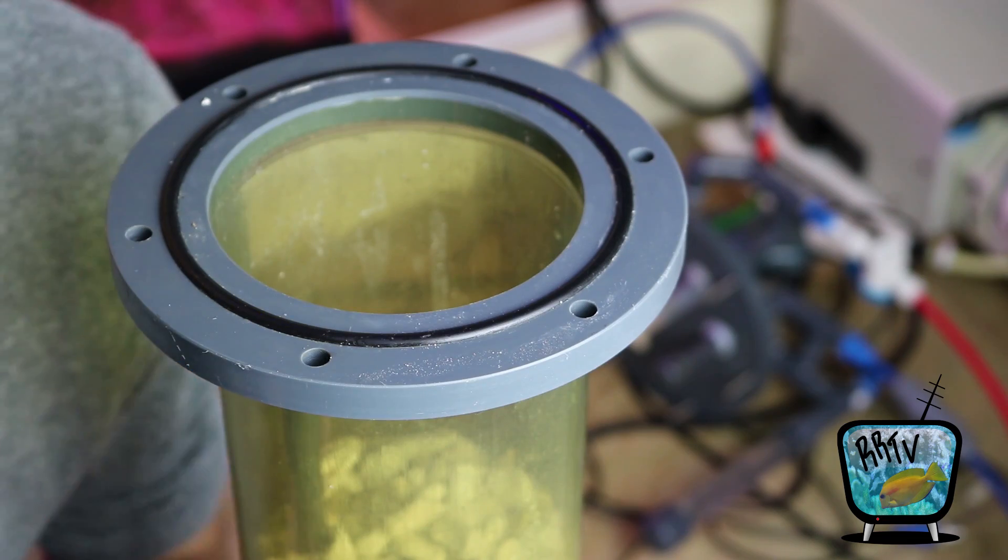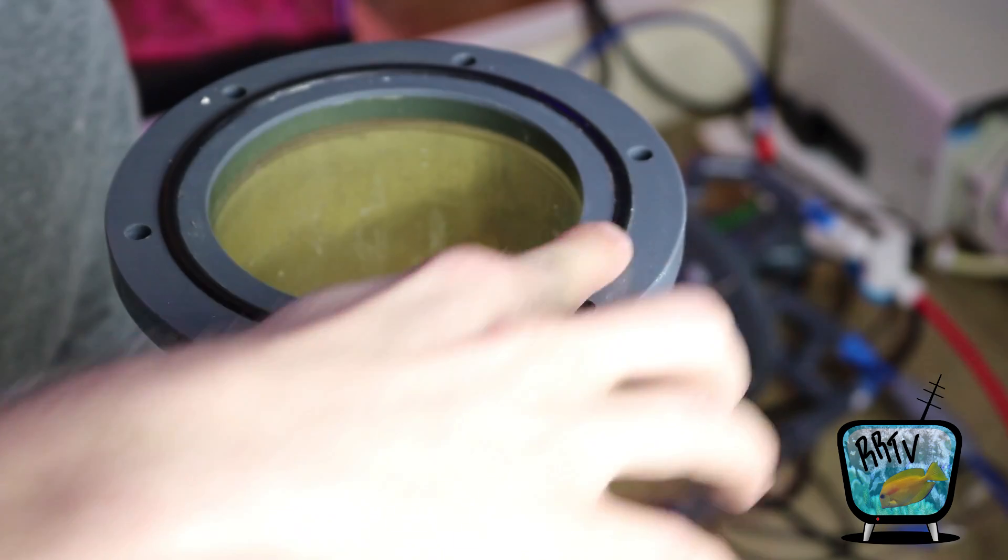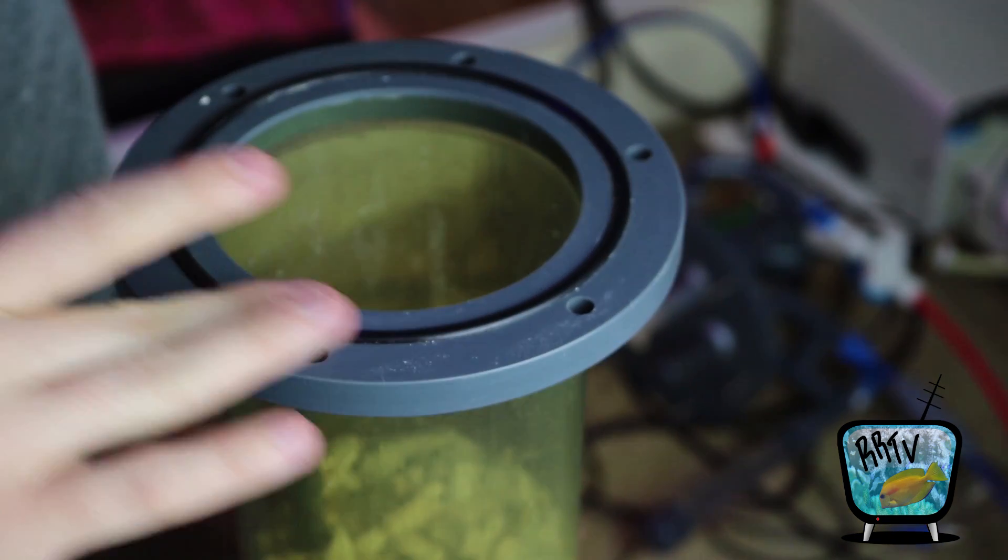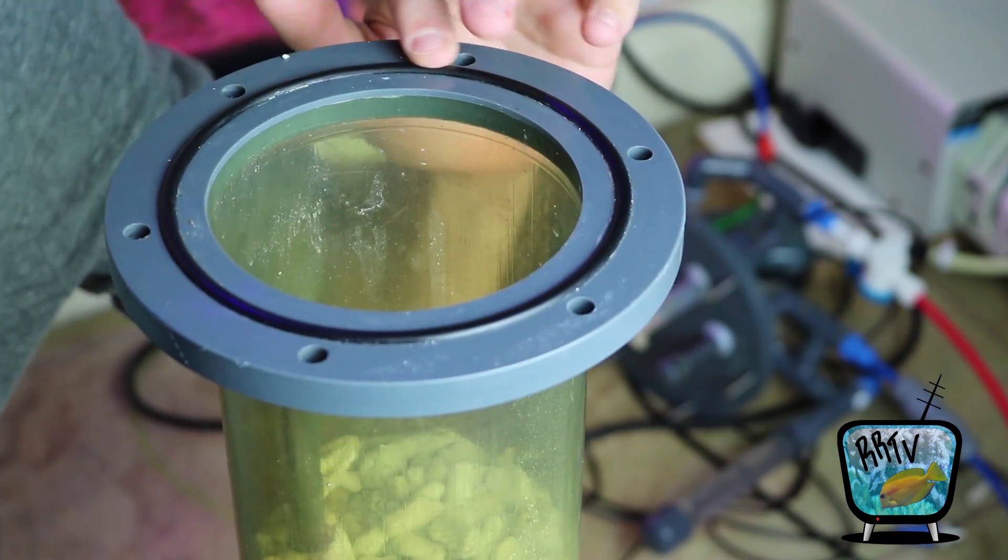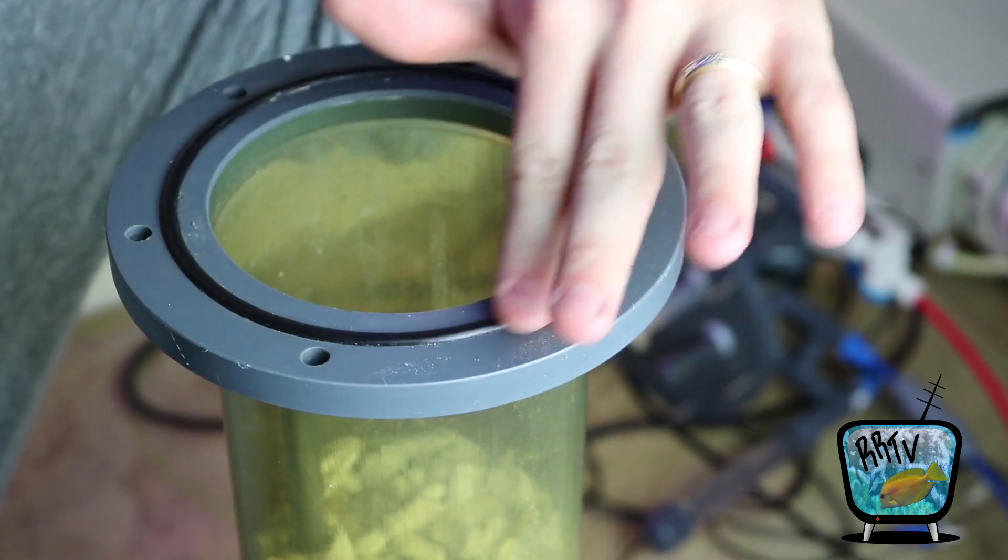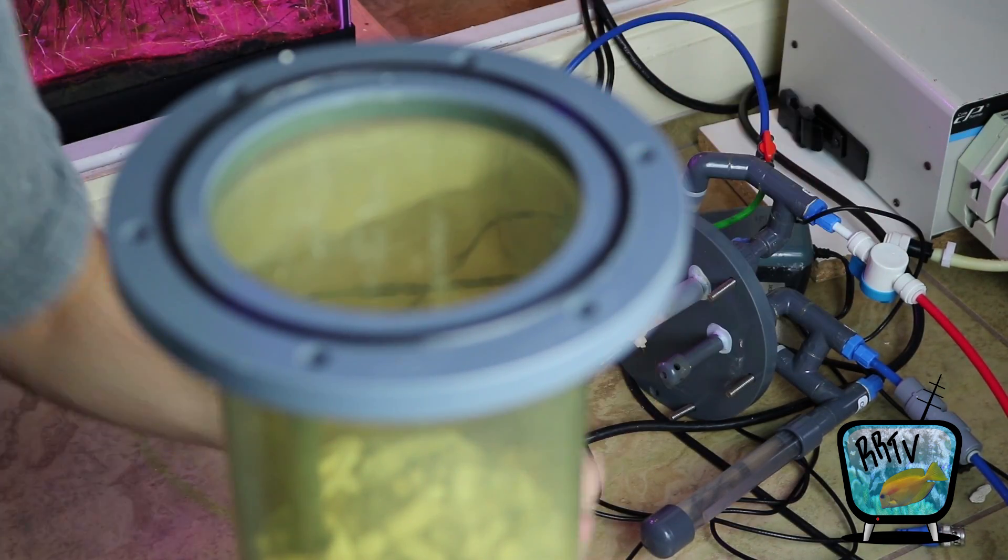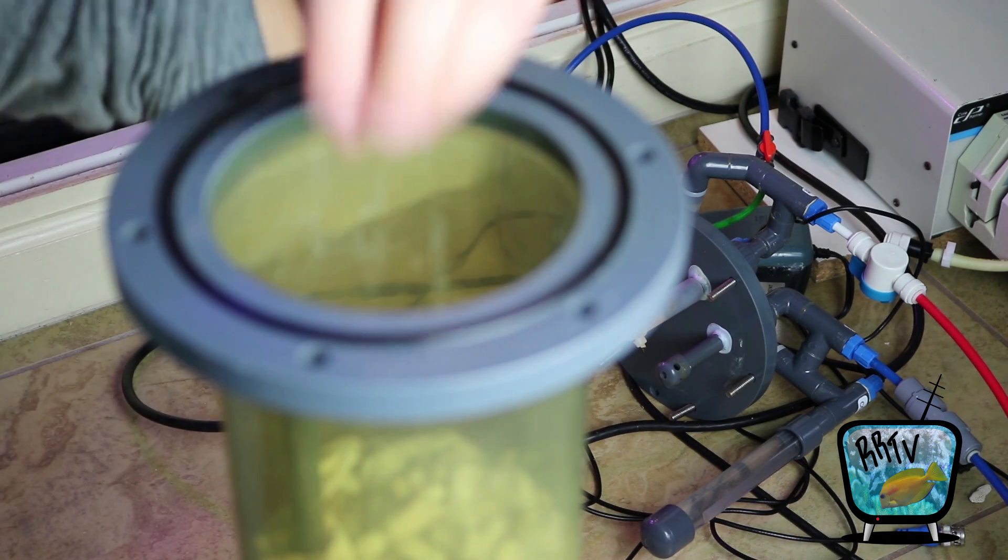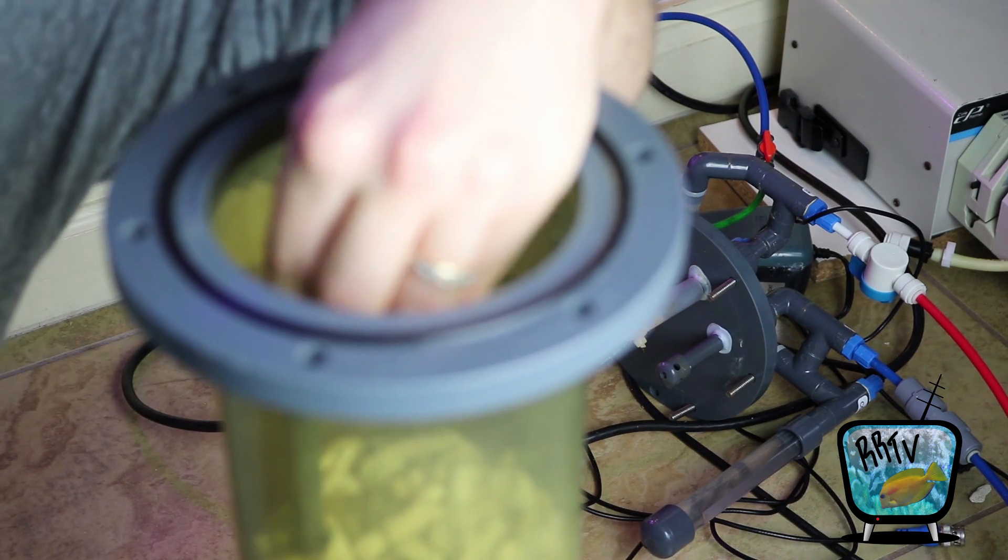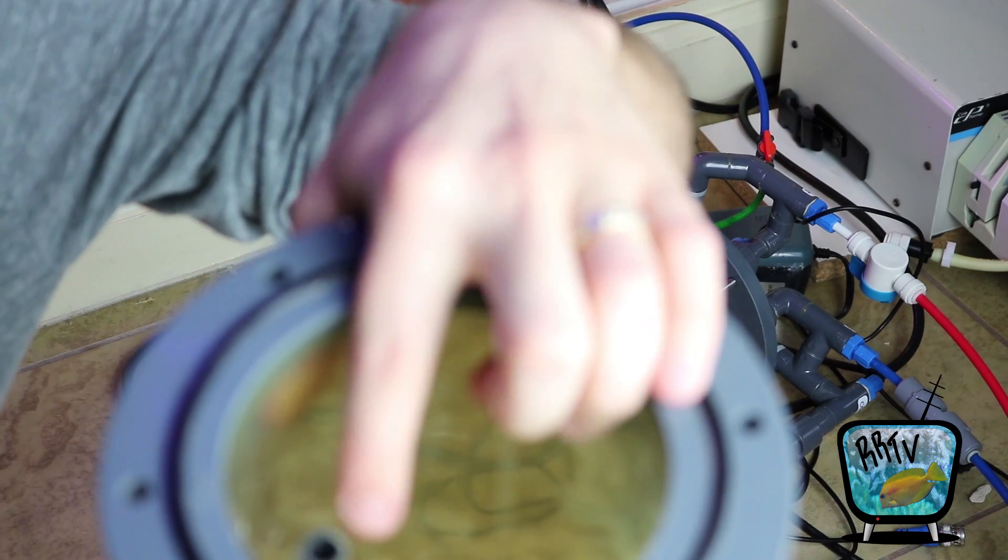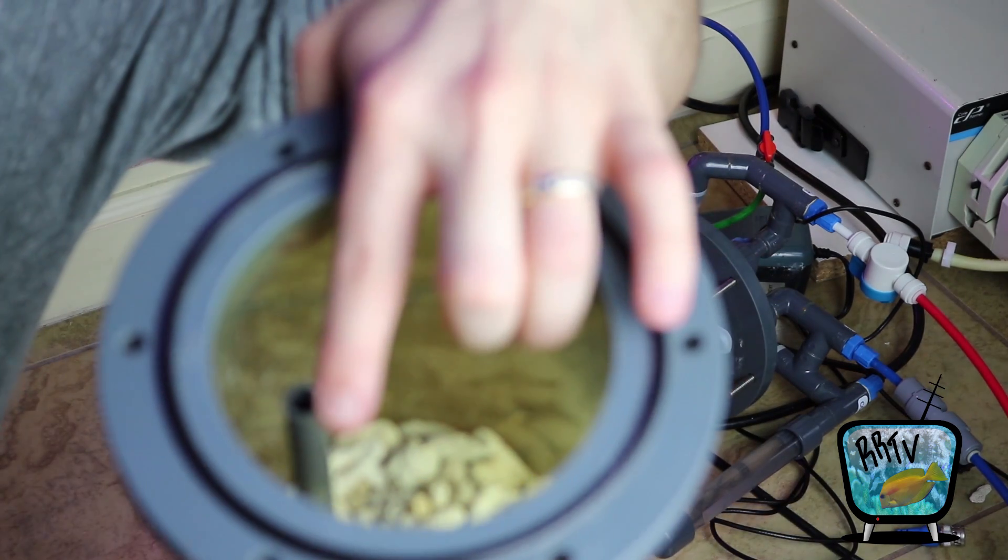One thing that we want to do is clean off this o-ring right here and make sure that there's no sand particles on the o-ring that can create a gap and water can leak out. We also want to make sure that this tube is positioned properly.